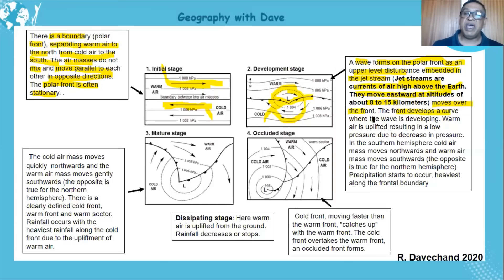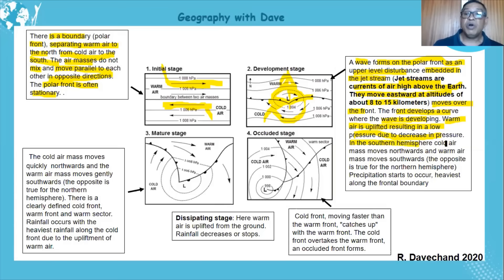Where the wave develops, warm air is uplifted because of the curve. Cold air moves northwards while warm air gets uplifted. Pressure decreases at this point because the air is rising — there's less air at the surface.